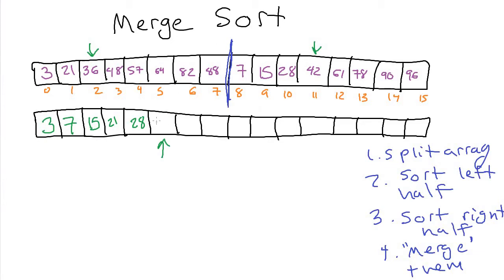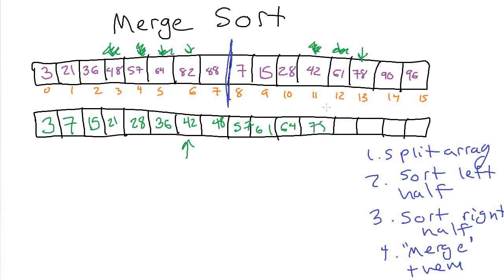Continuing the merge: the 36 is smaller, so we copy it down. Then we take the 42, increment, take the 48, take the 57, then the 61 from the right side, the 64 from the left, the 78 from the right, the 82 from the left, the 88 from the left, and then we run out of stuff on the left-hand side. At that point we just copy whatever's remaining from the right half — the 90 and the 96. That's what the merge step means: taking the smaller one from the left and right half one by one until the array is filled. The merge sort algorithm is now finished and the array is sorted.